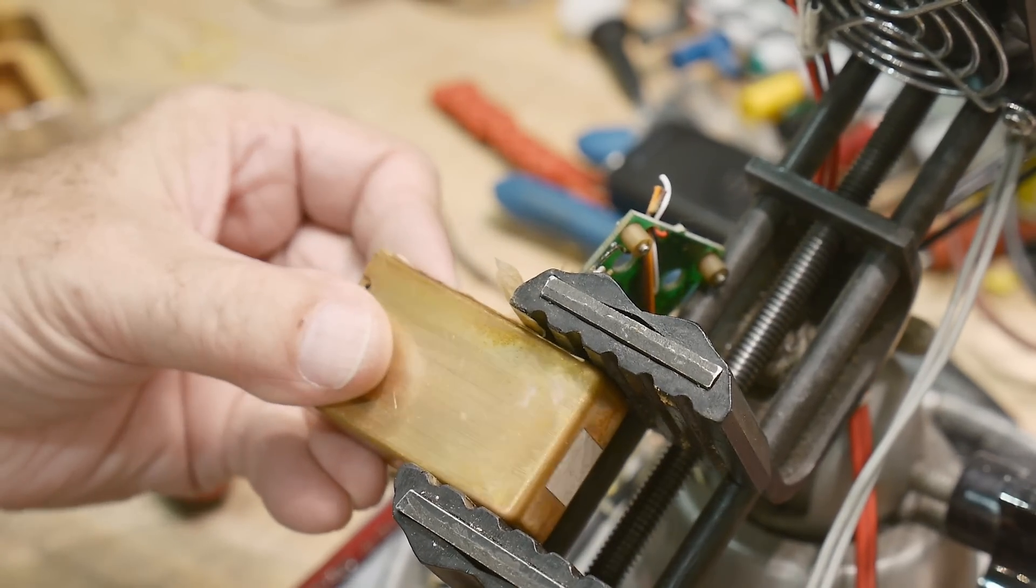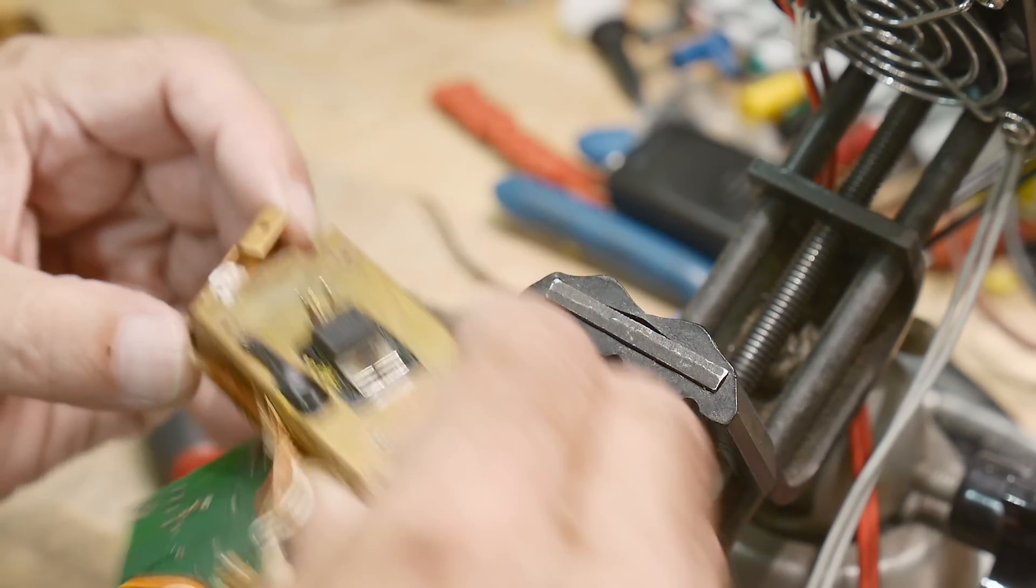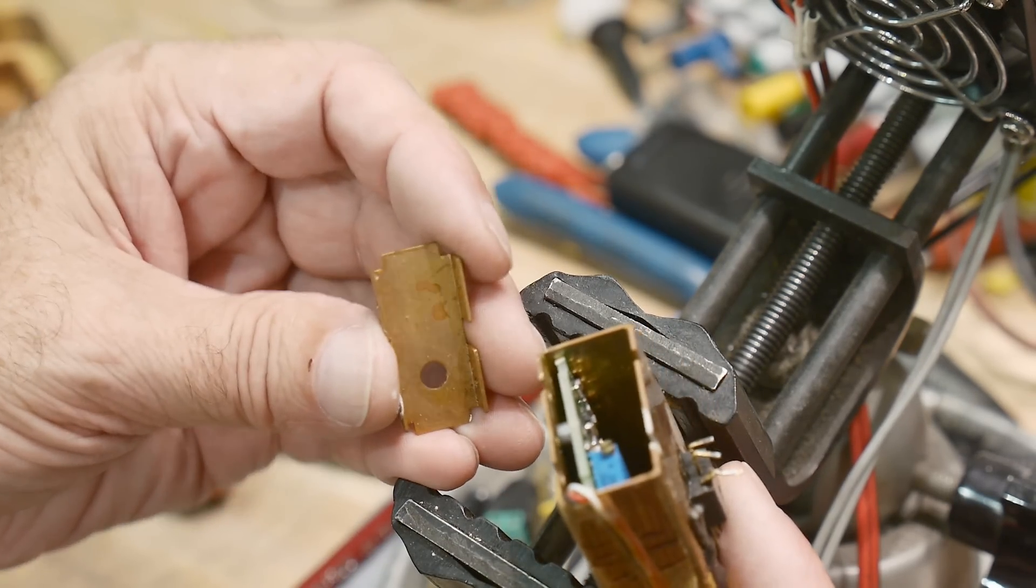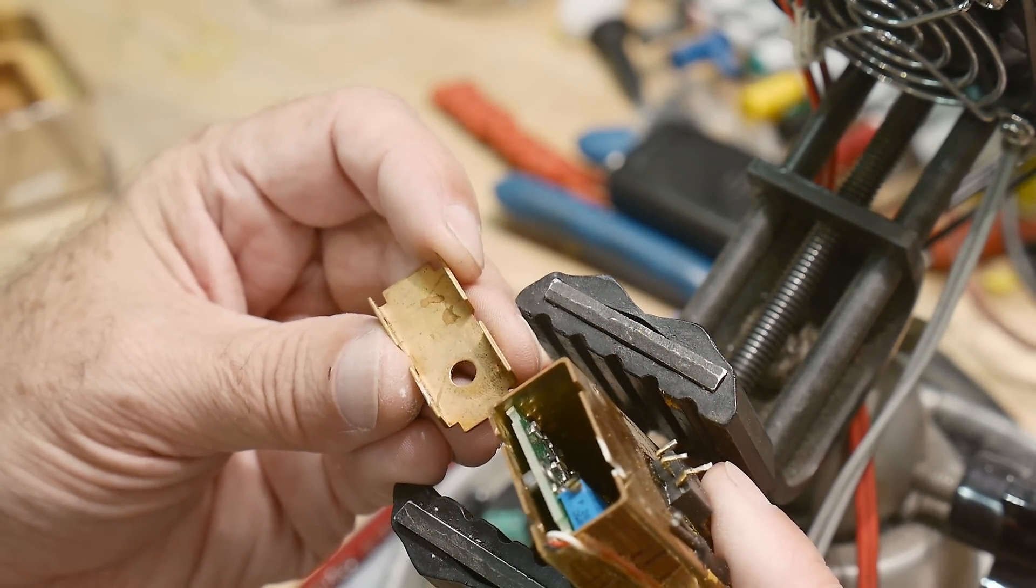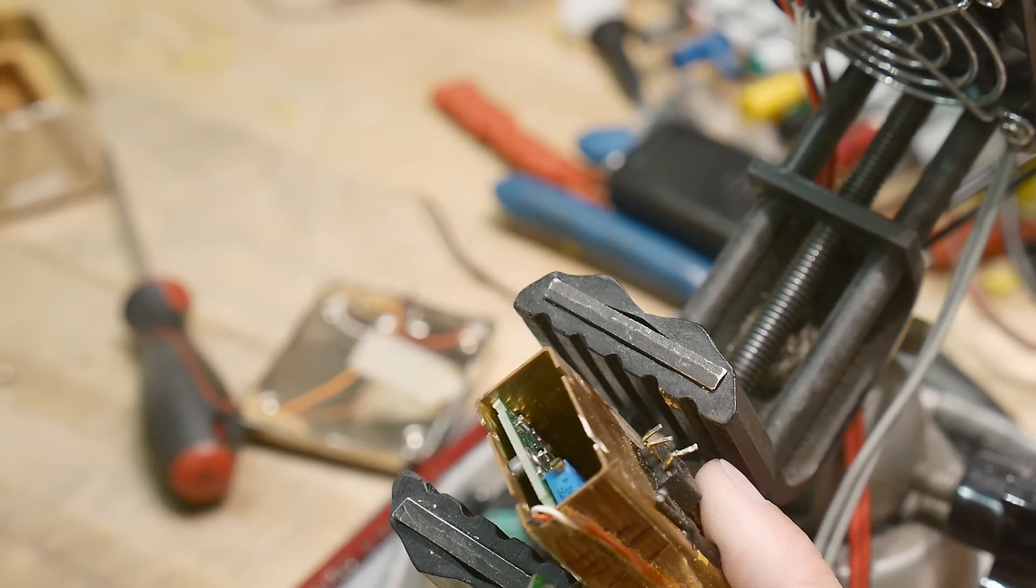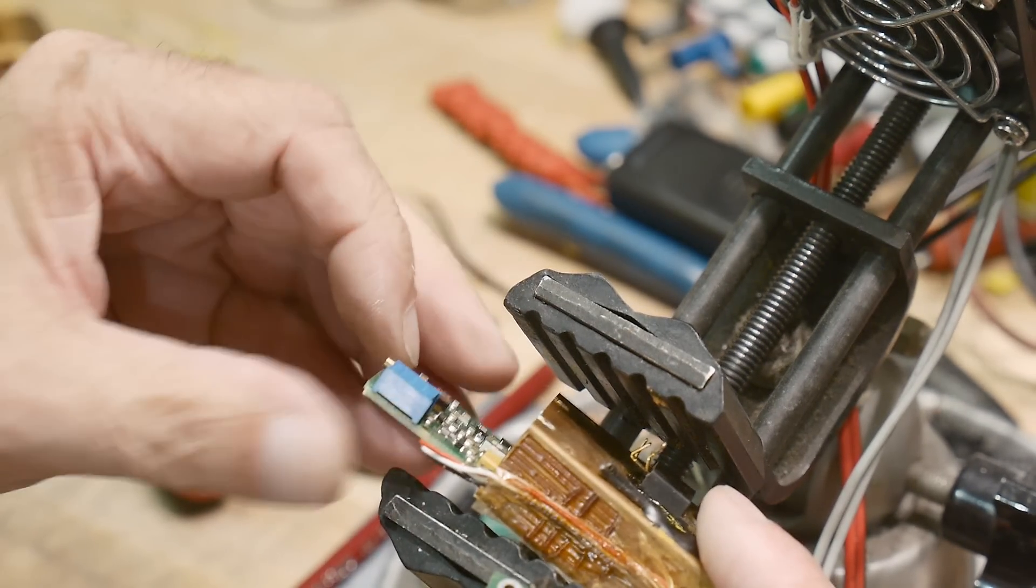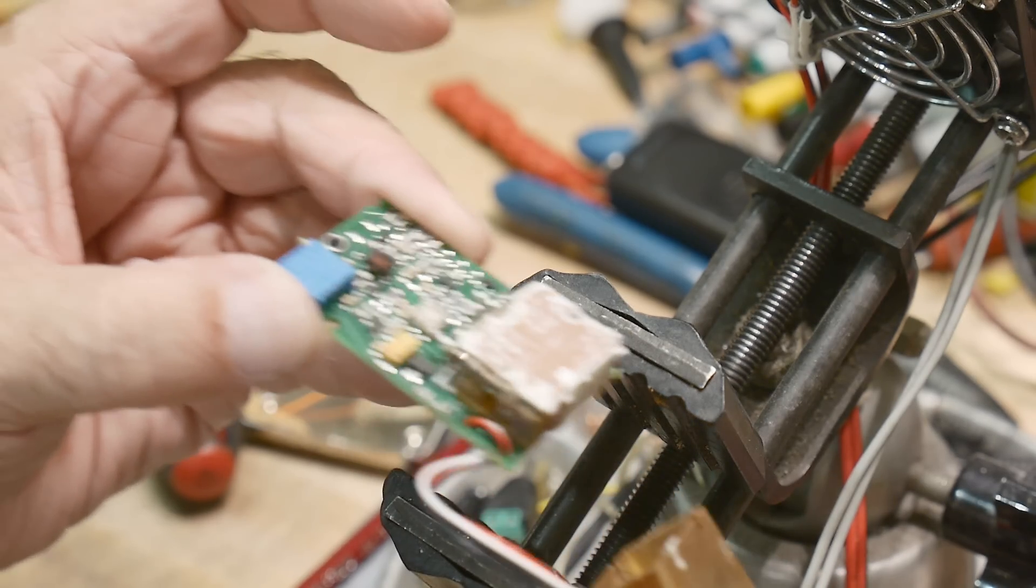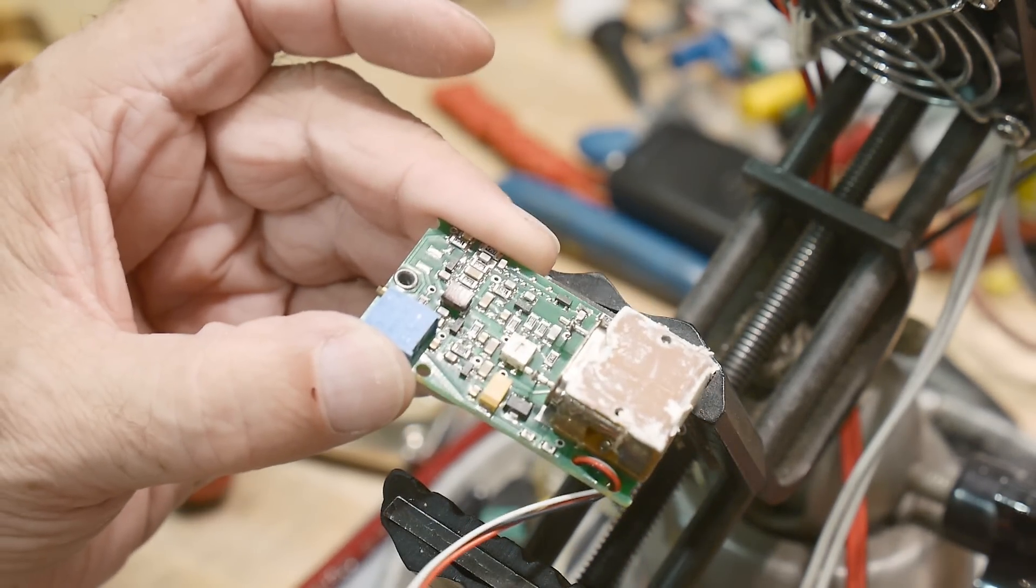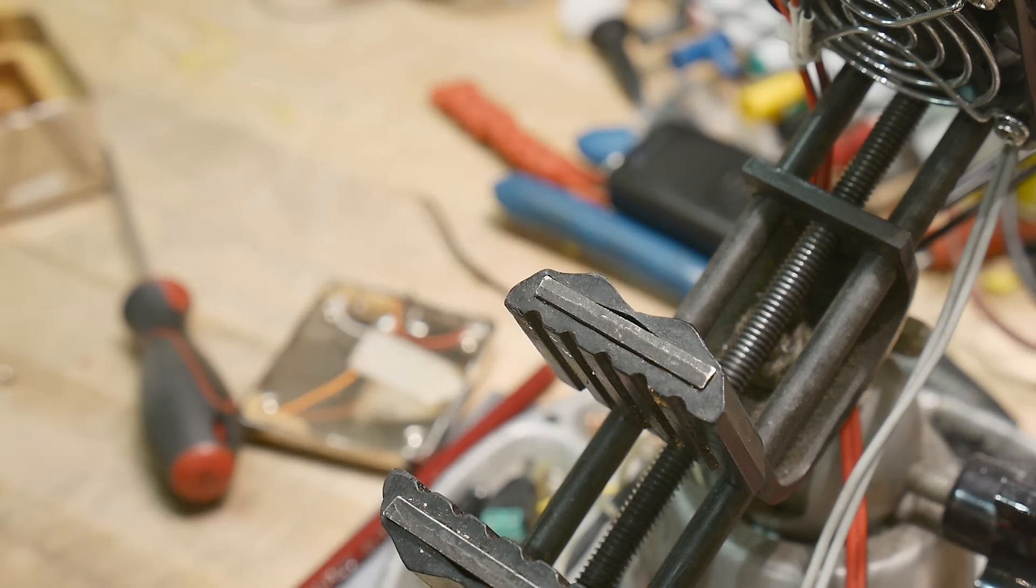All right, now does this come apart? Okay, that little end came off. All right, and inside is a PC board that we can pull out. And there is more stuff. So let's move it over to the bench.